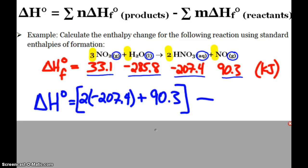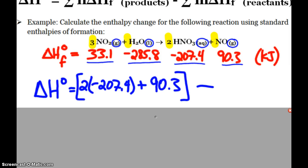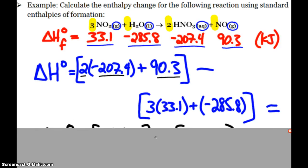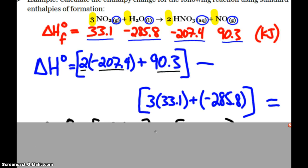So first up, my products. There are two of the nitric acids, so I have two times the negative 207.4 plus my 90.3 for my nitrogen monoxide. Subtracting now, I do the sum of the reactants. I have three of the nitrogen dioxide, so that's why I have three times the 33.1 and then just one mole of water, so negative 285.8.